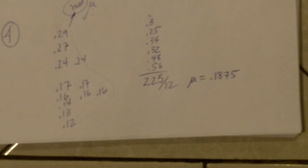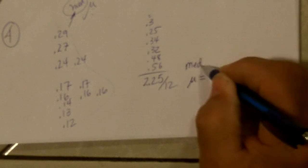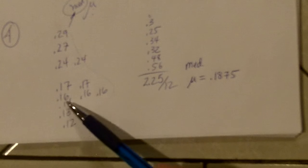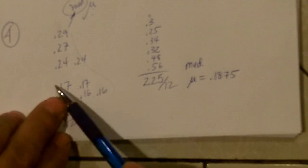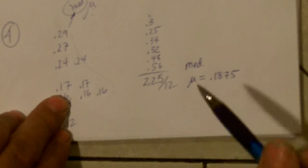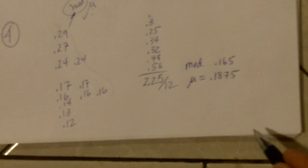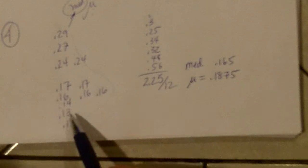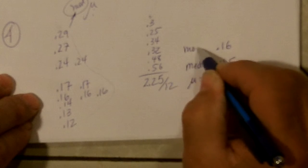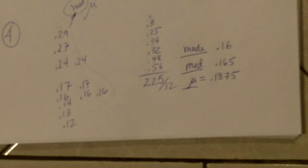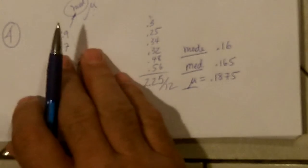Now what's the median? Well, that would be the middle value, and if I've got 12, I'd be halfway between 6 and 7. 1, 2, 3, 4, 5, 6, and 7, so the median would be halfway between .16 and .17, so it'd be .165. And the mode, the most common one, is .16. Mode, median, mean. So that's what they wanted us to do for number 4. Now I think we used these numbers again, so I will keep these nearby.